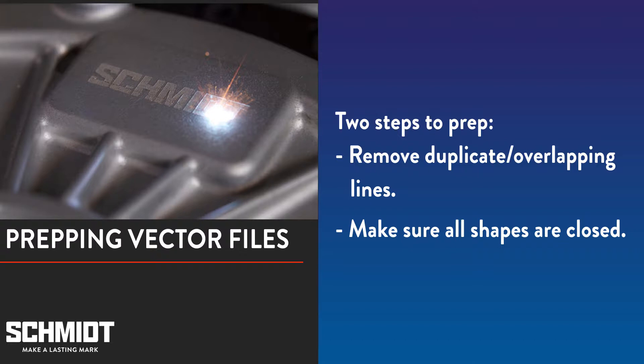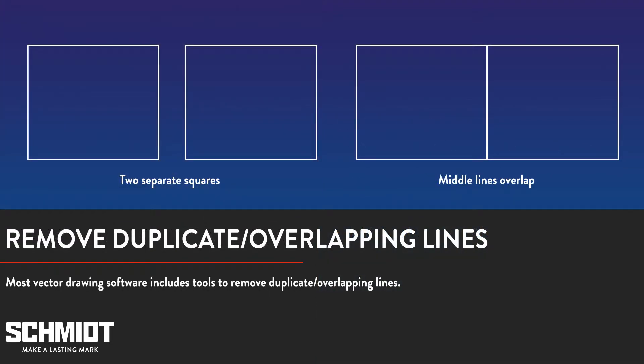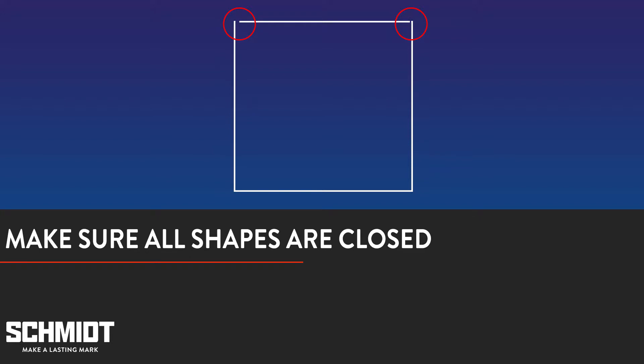With vector files you just have to do two things before importing the file into your laser software. The first is to remove duplicate or overlapping lines. In these pictures you can see that when two squares are placed right next to each other, the two lines in the middle overlap — if your logo has any overlapping lines like this you'll need to delete one of them. Secondly, check to make sure that all your shapes are fully closed. If your logo has shapes with openings you'll need to close them before importing the file into your laser marking software.